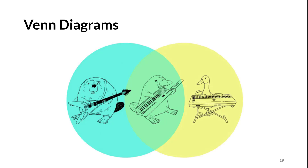Folks are familiar with the general concept of Venn diagrams. We often use them to compare and contrast two things. Properties unique to the two things go in the outside circles, and properties common to those two things go in the overlapping portion. Venn diagrams are useful for visualizing events in probability as well.